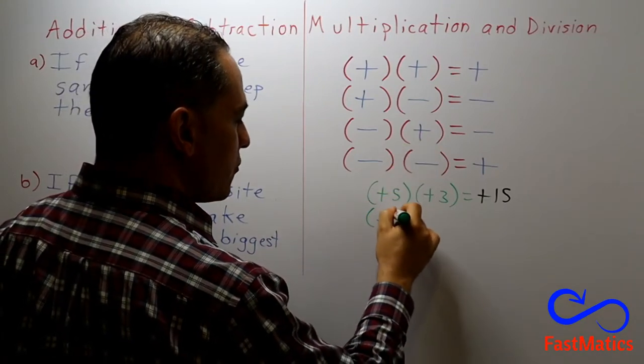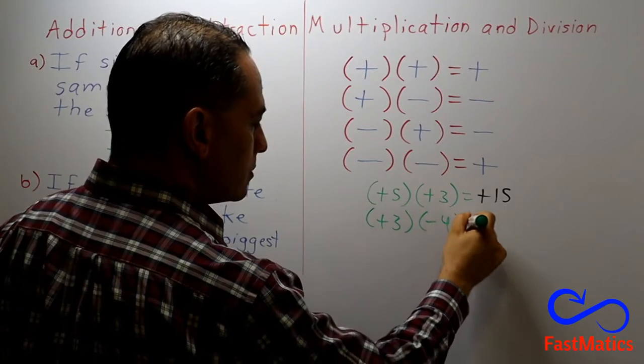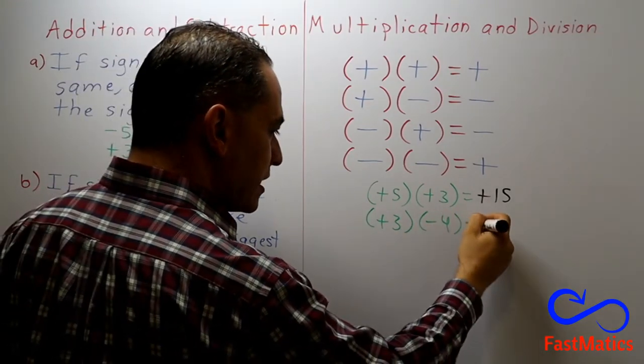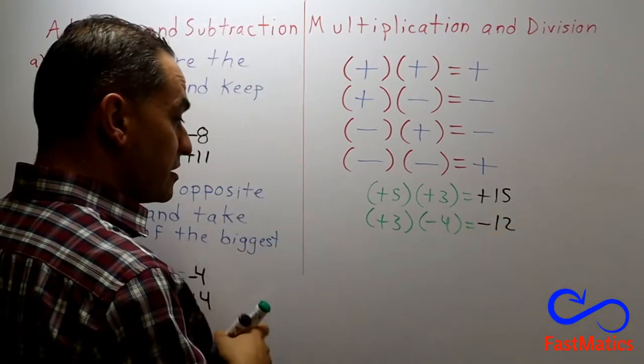Second example. Plus three times minus four. Positive times negative, negative. Three times four, twelve.